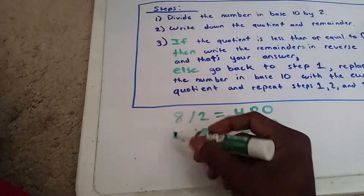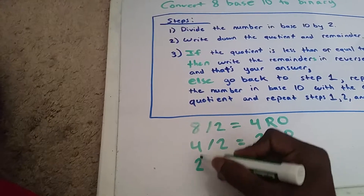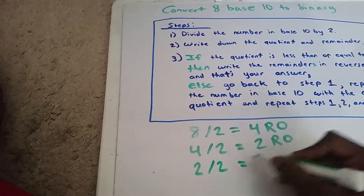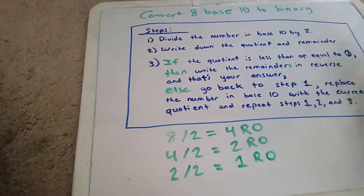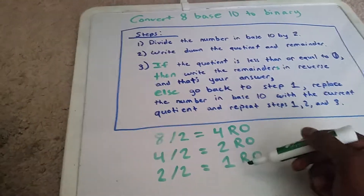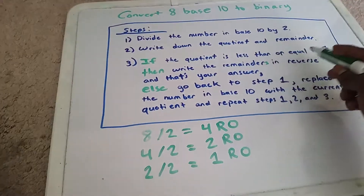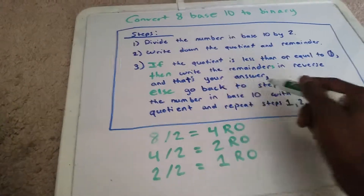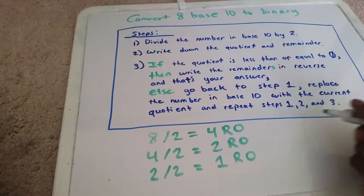We now replace the number 4 with 2 and go back to step 1: 2 divided by 2. That gives us 1 with a remainder of 0 again. That was step 2. We check if the quotient is less than or equal to 0 — the quotient is 1, so no. We go back to step 1, replace the number in base 10 with the current quotient, and repeat steps 1, 2, and 3.